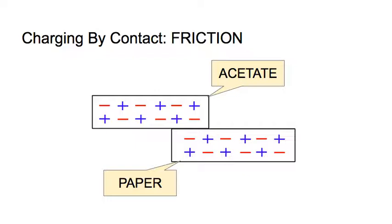In fact, paper has a stronger tendency to grab electrons compared to acetate, so what we would expect to see is that paper would have a much easier time pulling electrons from acetate.